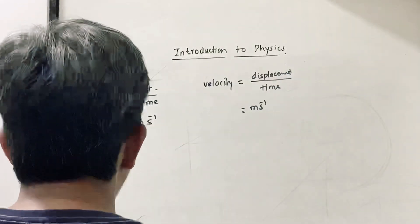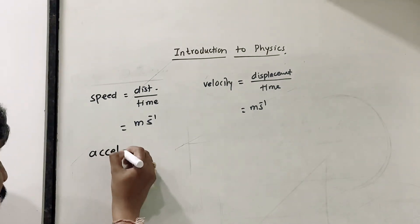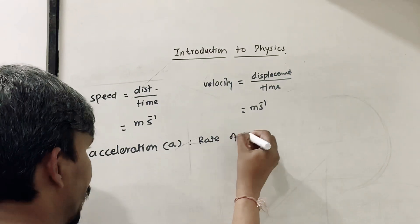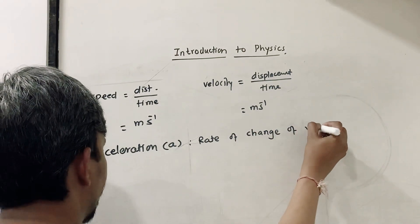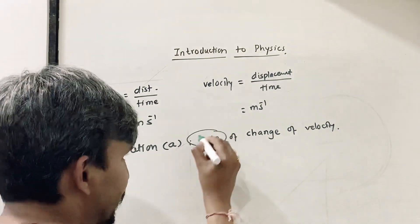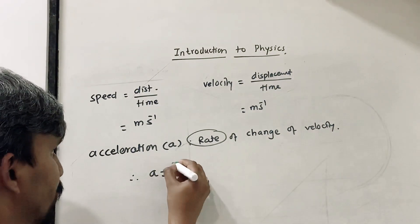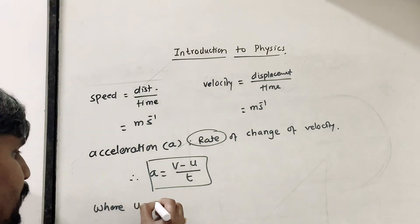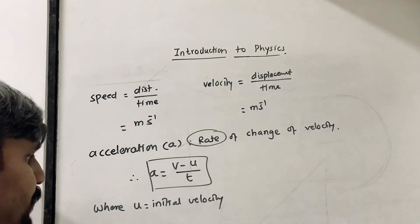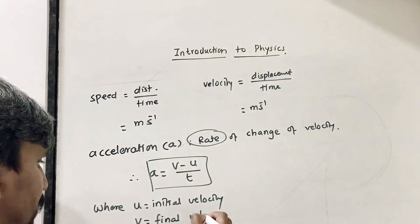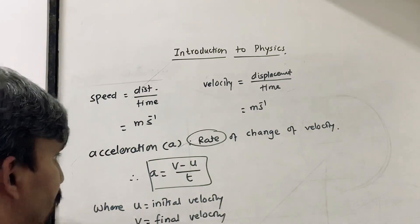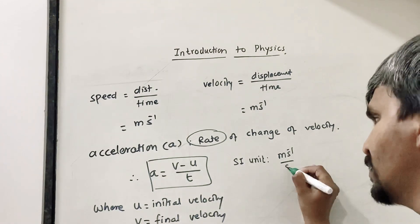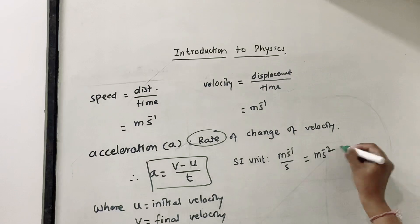Acceleration, denoted by small 'a', is the rate of change of velocity. The formula is: acceleration = (V − U) / T, where U is the initial velocity, V is the final velocity, and T is the time. The SI unit for acceleration is meter per second squared, since it is velocity (meter per second) divided by time (second).